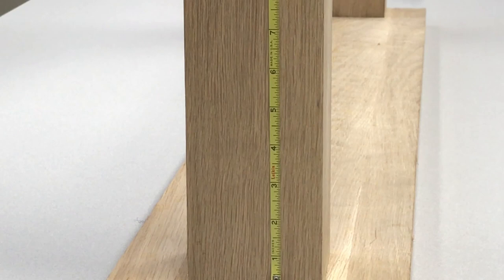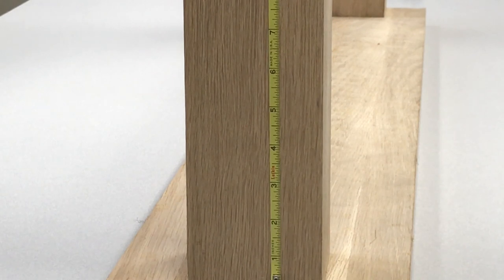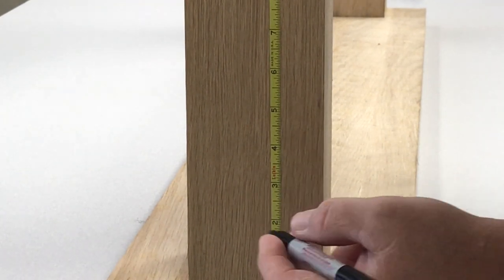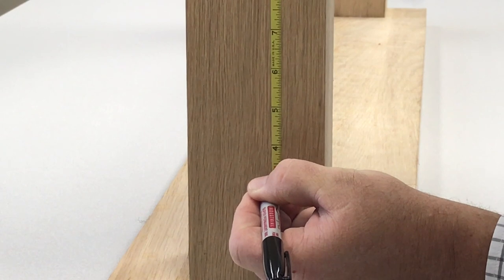First, let's take a look at installing this system with level post. The first thing you want to do is go through and mark all of your hole locations at three and an eighth inches.